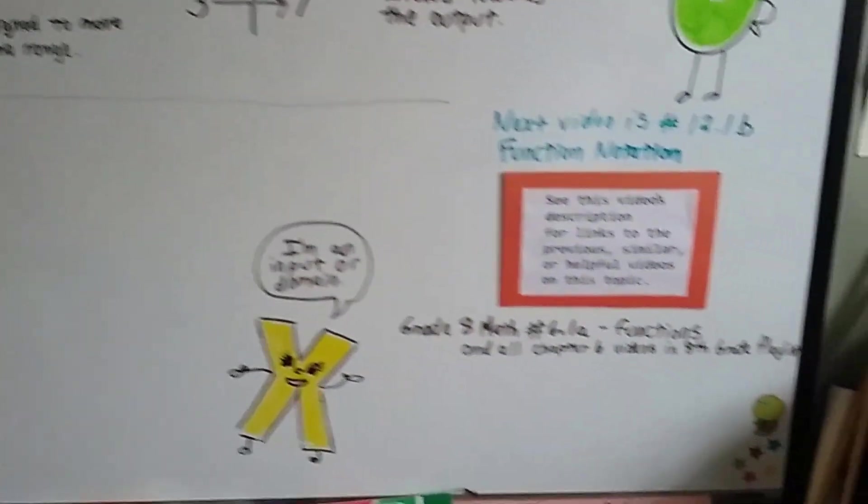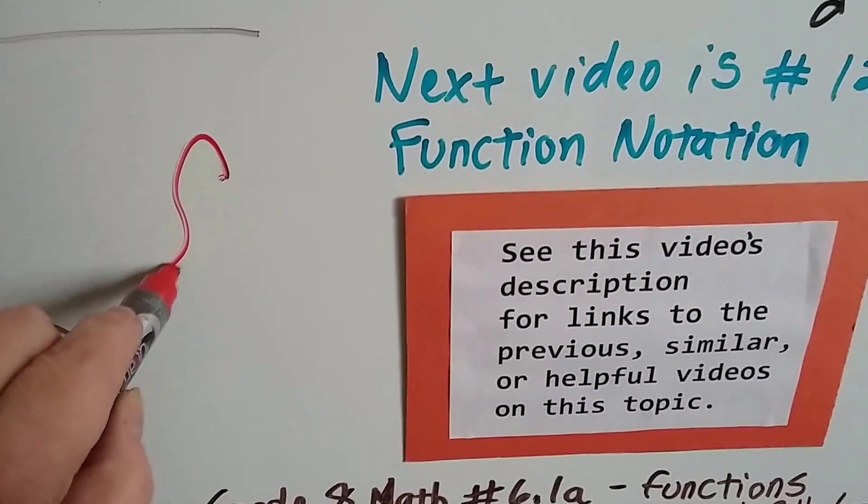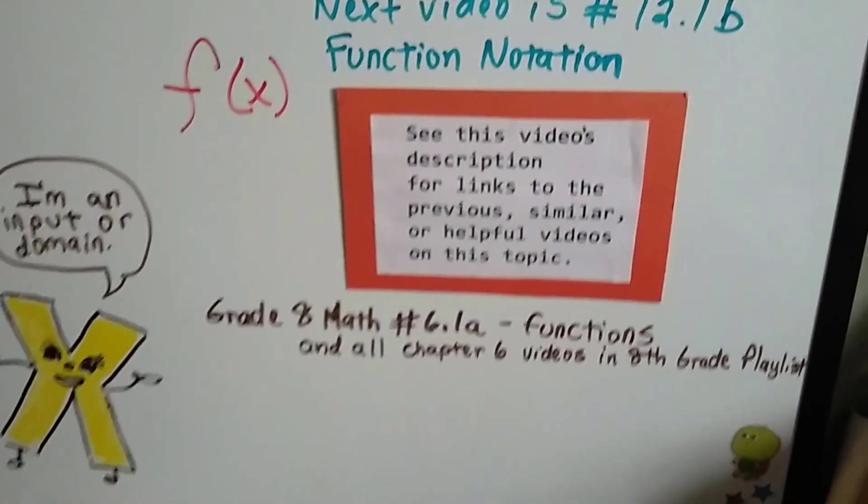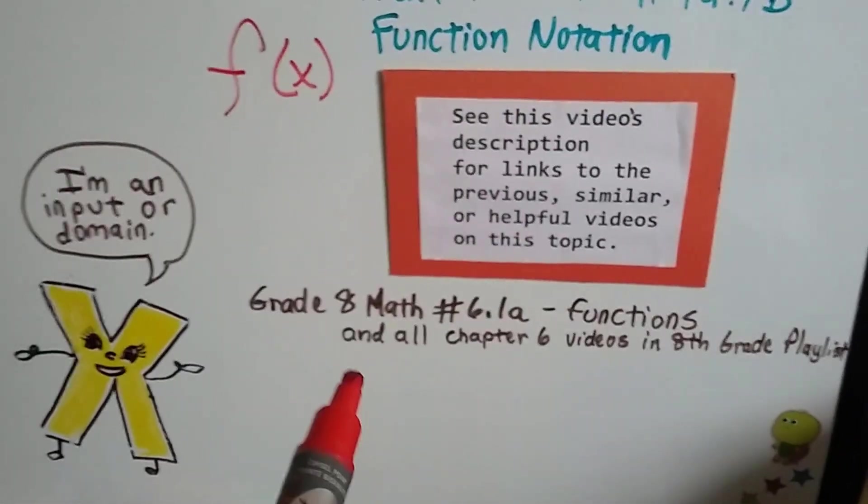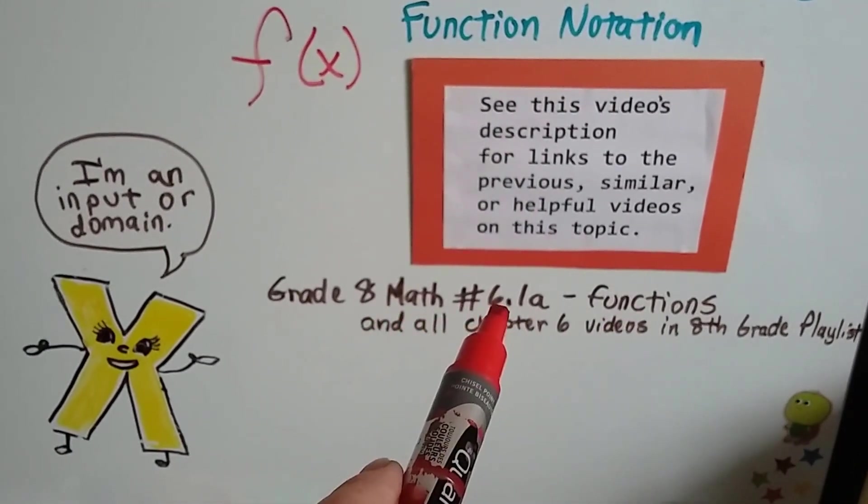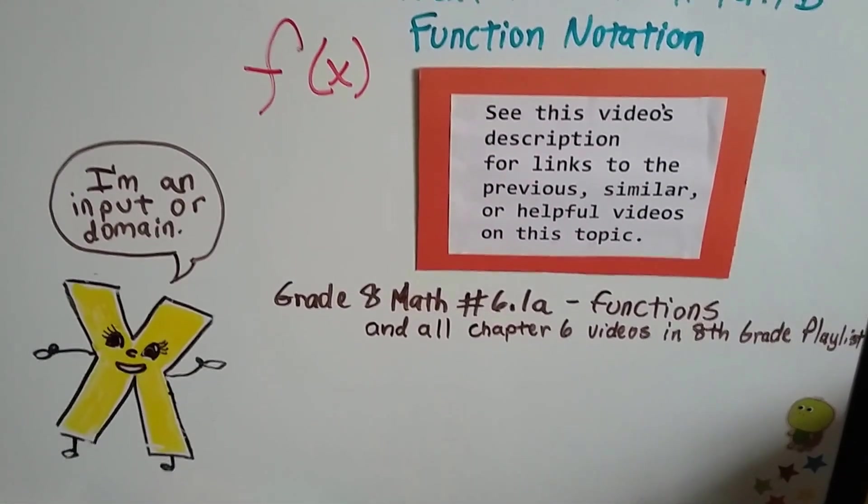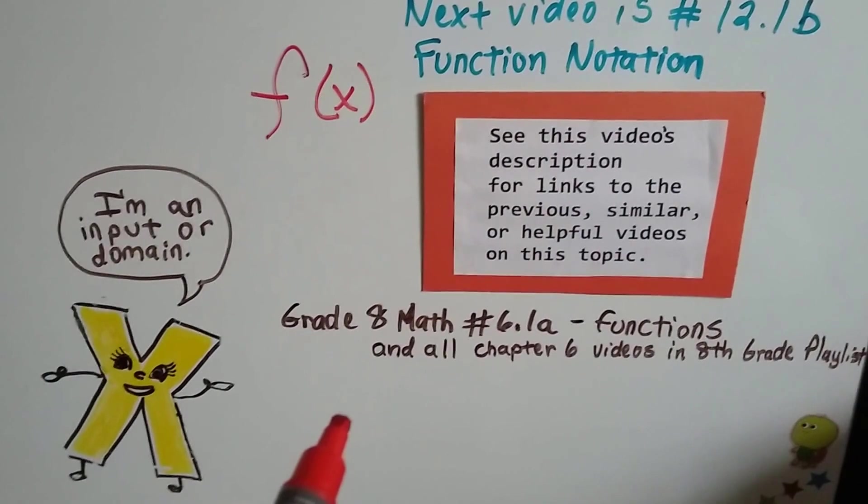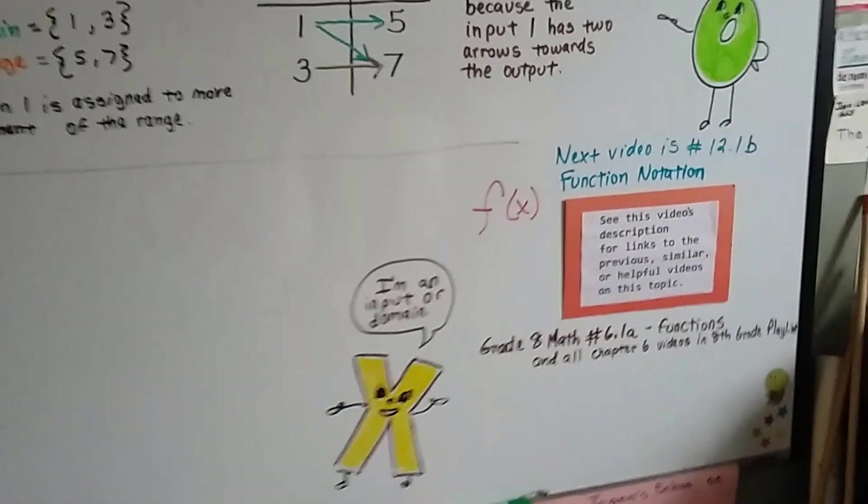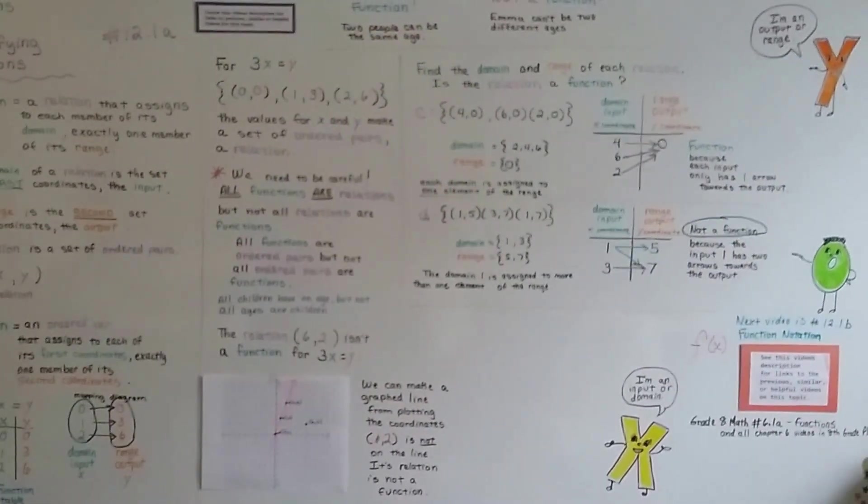So, our next video is going to be 12.1b and we're going to talk about function notation. That's when you see that script f and then you see like an X like this. That's the function of X. And, we're going to talk about that next. Now, this is also pretty cool. In my grade 8 math playlist, I've got an entire chapter 6 starting with 6.1a that talks all about functions and it gets really into detail. So, you might want to check that out and that's going to be in the description of this video. You can just click on it and you'll be able to watch all those function videos. Help you catch up and figure out what's going on so you can get a good grade for this chapter. I hope you're doing well and I'll see you next video. Bye!